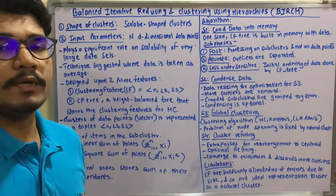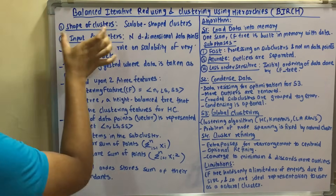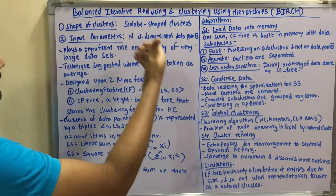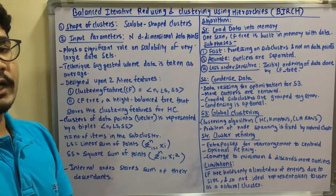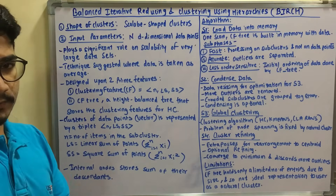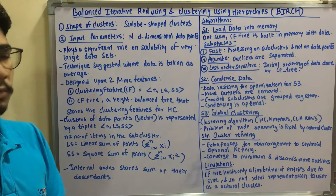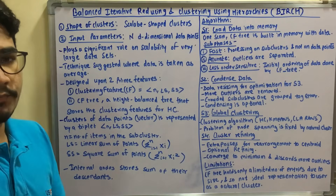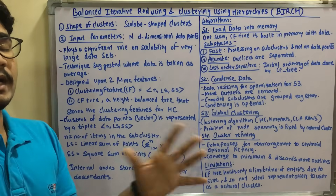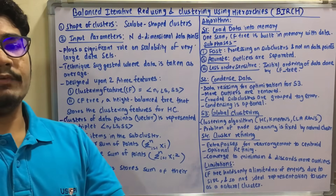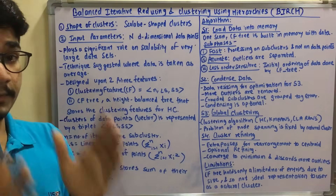We'll start with an overview of what BIRCH actually is in data mining and why it is used for clustering. Two important points are: it handles scalable shapes of clusters, including very large scale-in or scale-out natural clusters. It is mainly used for very large datasets of 50,000 or one lakh data points — to cluster, minimize, or condense them.